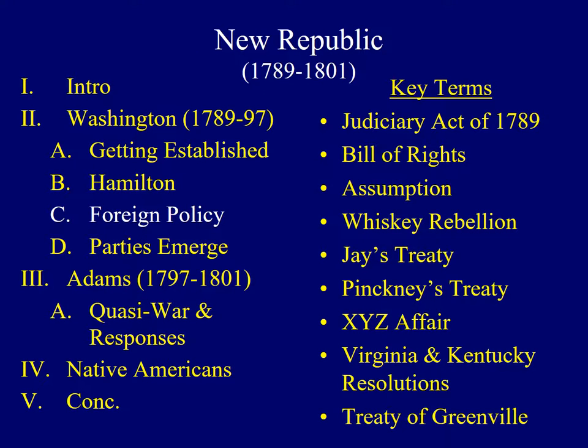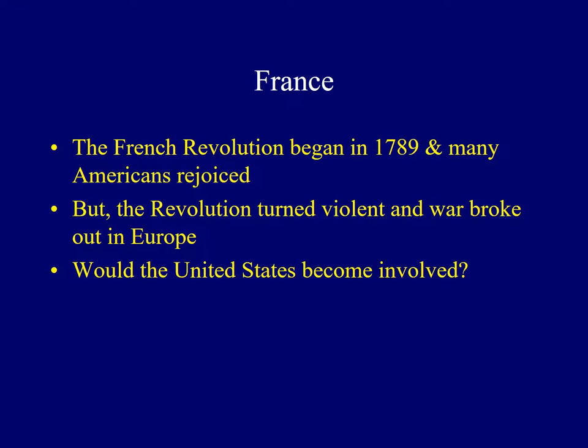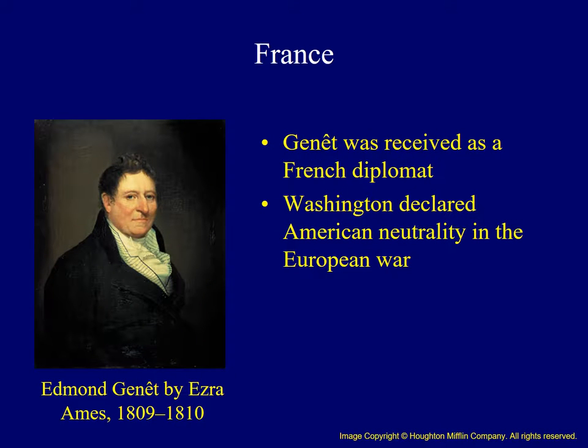We'll now explore issues of foreign policy during the era of the early Republic. In 1789, revolution broke out in France. Many Americans, particularly Thomas Jefferson and his followers, rejoiced. However, it turned violent in the early 1790s and the king was executed. As fighting broke out among European nations, the United States was still bound to the French by a treaty from the Revolution. Considerable pressure was placed on the nation to choose sides. Citizen Genet was dispatched as a representative of the French government, yet George Washington simultaneously issued a proclamation of neutrality, thereby invalidating the previous alliance with France.